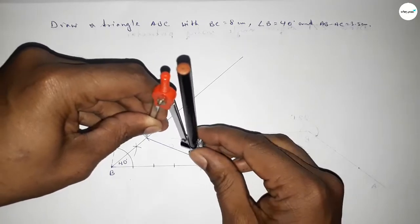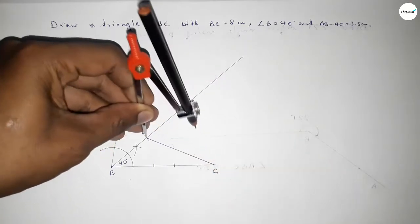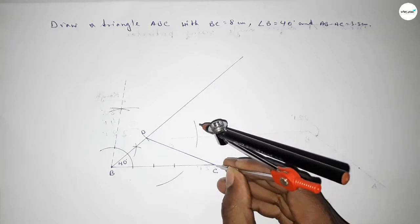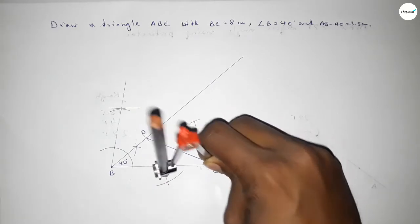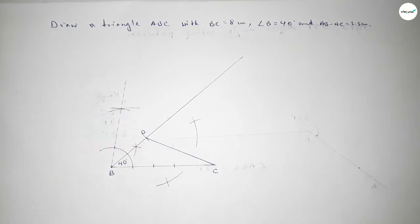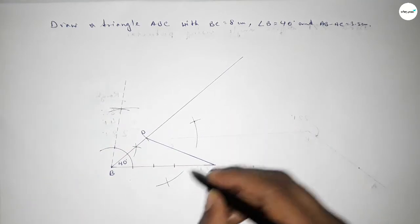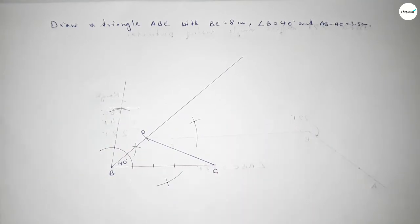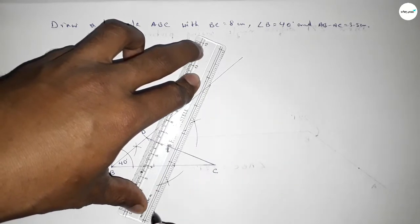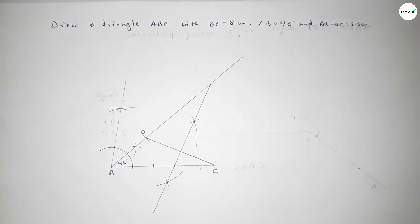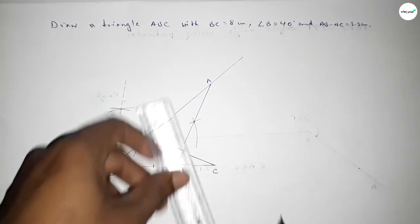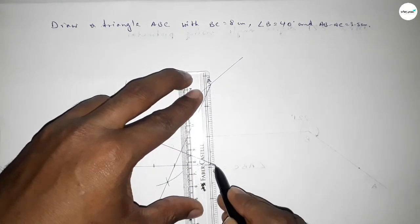Next, bisecting line CD. Putting the compass on point D, taking greater than half of CD, and drawing an arc. With the same length, putting the compass at C and cutting on both sides. Both curves intersect at two points. Joining these two points, which meets line BD at point A. Now joining A and C.